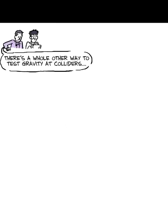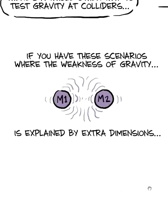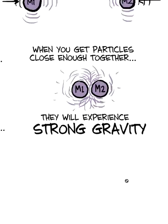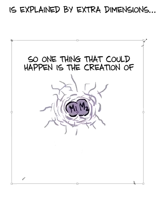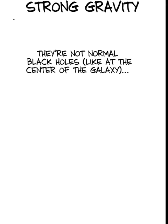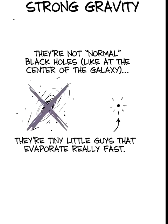There's a whole other way to test gravity at colliders. Which is if you have these scenarios where the weakness of gravity is explained by these extra dimensions. If you can get particles close enough together, you would be able to experience strong gravity. And so another thing that could happen at the LHC is that you could collide two particles. And if they get close enough, what this would manifest itself as is the creation of a little black hole. This black hole is not like any normal black hole. Well, no black hole is really normal. But it's not like an astrophysical black hole like the ones that we think of at the center of the galaxy. These are tiny little guys. And we know because of Hawking's work that tiny little black holes evaporate very fast, unlike big astronomical black holes.